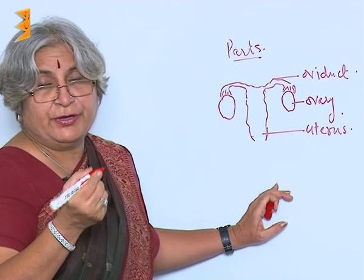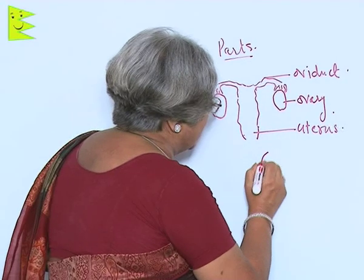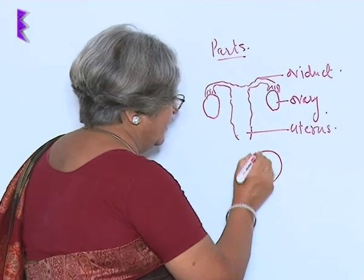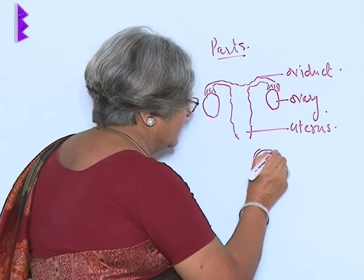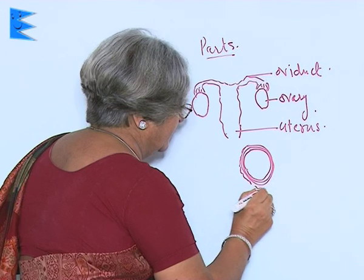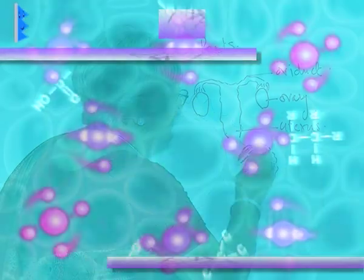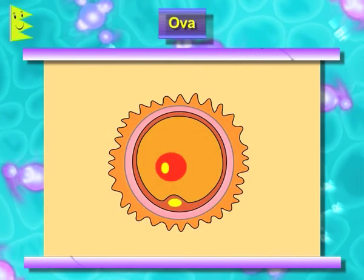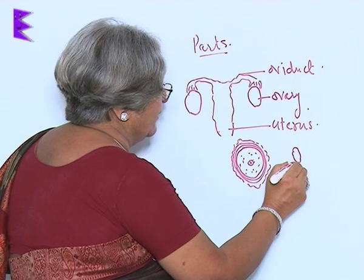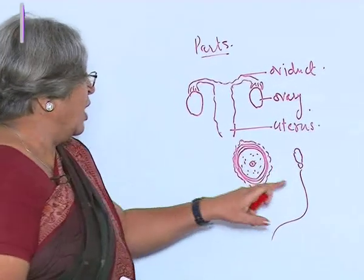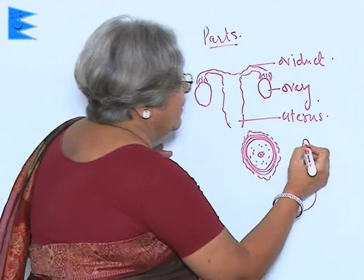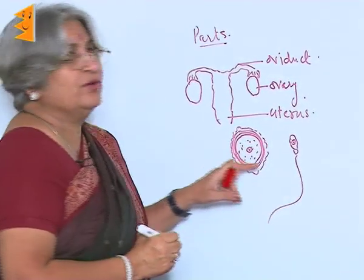The ovary produces ova. Ova is also a single cell like sperms, but it is rounded. There are some layers around it, and it is filled with a large amount of cytoplasm and a nucleus. I will draw the sperm alongside it so you can see how much difference there is in size. The sperm is tiny while the ova is large, but the size of the nucleus is the same.